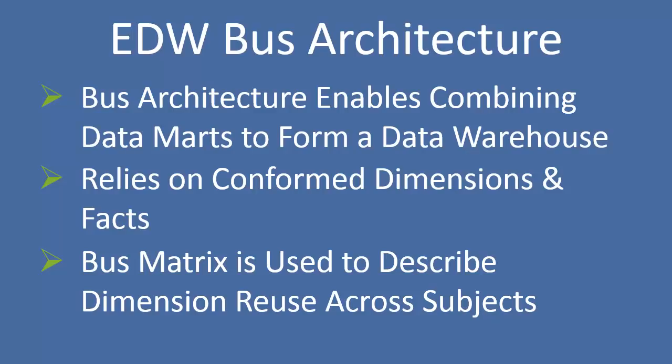In other words, I can pull sales data by product and inventory data by product. When I pull that data, I know that the sales product is the same as my inventory product. This obviously relies on conformed dimensions — my product has to be the same in each of the different data marts I'm pulling data from. So the conformed dimension is critical to making this approach successful.